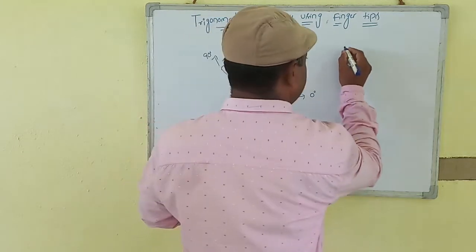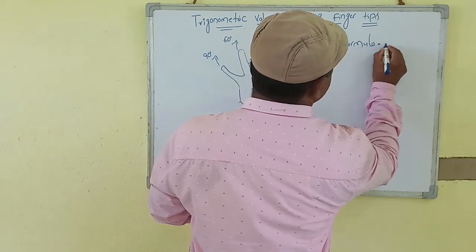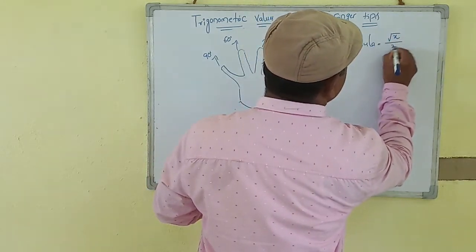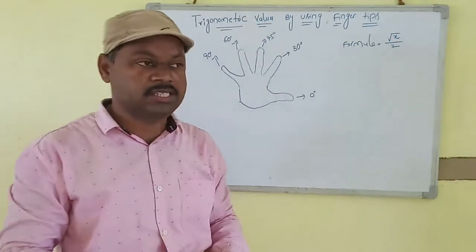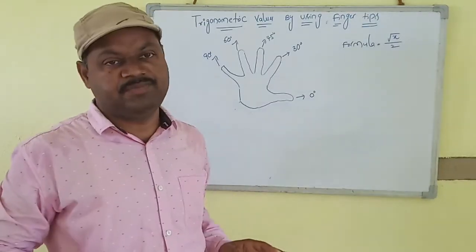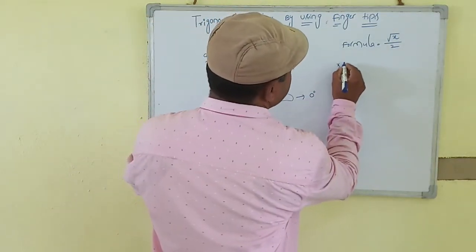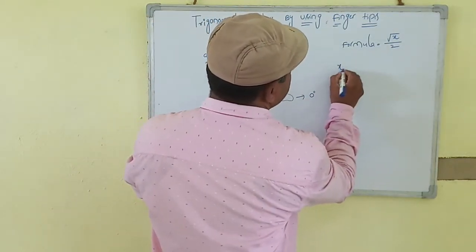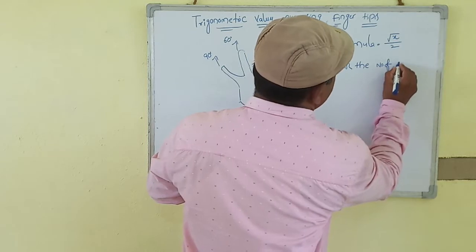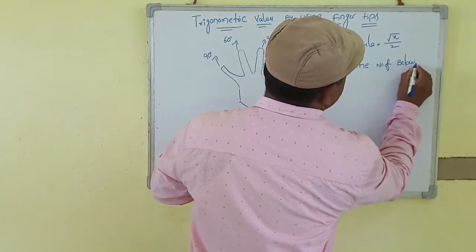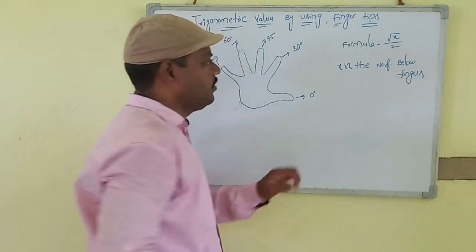Okay students and friends, here is the formula: the value equals the square root of x divided by 2, that is √(x)/2. Here, x means the number of fingers below the selected finger.